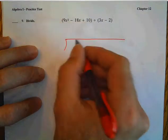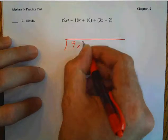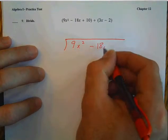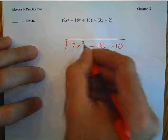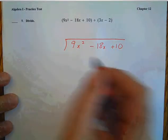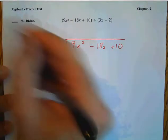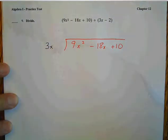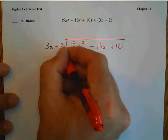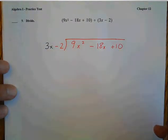This problem is already written in standard form, so we'll rewrite it with decreasing exponents and put the 3x minus 2 on the outside. I'm going to highlight that 3x in black because we'll reference it each time.